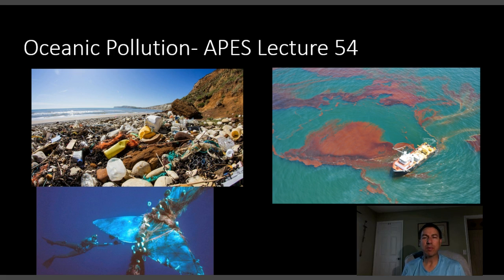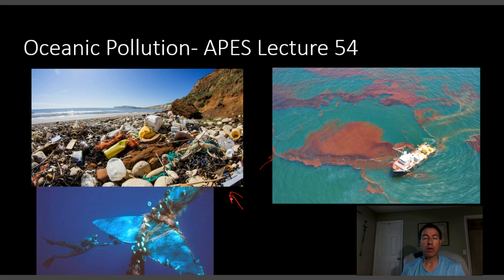Hello, this is Mr. Coates and this is APES lecture number 54 on oceanic pollution. Oceans tend to collect quite a lot of the pollutants that come off the land from human activities. You can see on this picture there's tons of floating debris that washes up even on islands where no one lives out in the middle of the Pacific or Atlantic Ocean. We also have problems with oil pollution in the ocean.